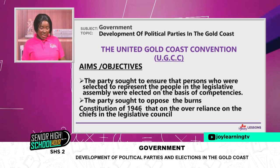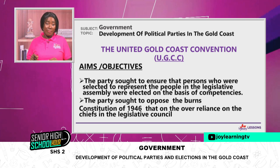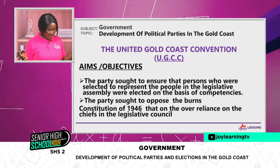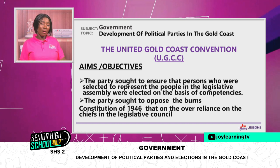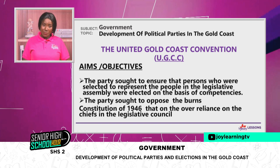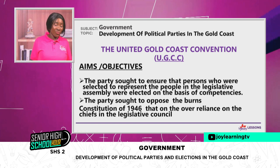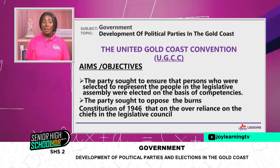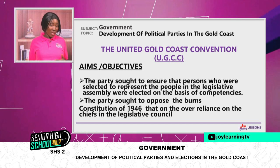Another aim was that persons selected to represent the people in the Legislative Assembly should be selected on the basis of competence and merit. When we look at the Alam Ban's constitution, there were 31 members in the Legislative Assembly — six were official members with voting rights, about 25 were unofficial. Nine came from the Joint Provincial Council, four from the Asante Manse Council, and five from major towns through universal adult suffrage.